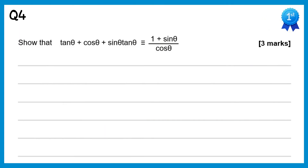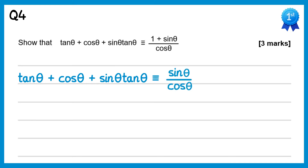For this question we're going to convert all of the tans to sinθ over cosθ. So the tanθ at the front becomes sinθ over cosθ. We'll keep cosθ as it is, and then for sinθ·tanθ we'll change that tanθ into sinθ over cosθ as well, giving sinθ times sinθ over cosθ.